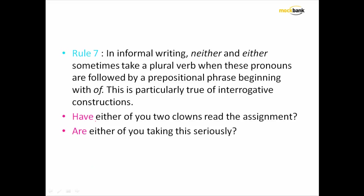Now try to read this. It says 'either of you' — in both cases, even though we have used 'either,' this phrase 'either of you' should be taken as plural, and hence we are going to use 'have' and 'are.' This prepositional phrase rule works only in interrogative sentences. So wherever you get 'either of you' or 'neither of you' in interrogative sentences, you need to use a plural helping verb.